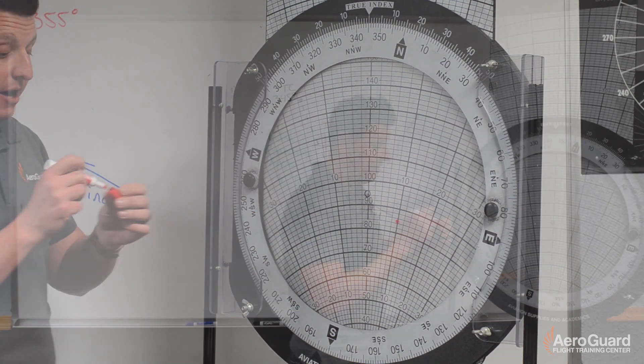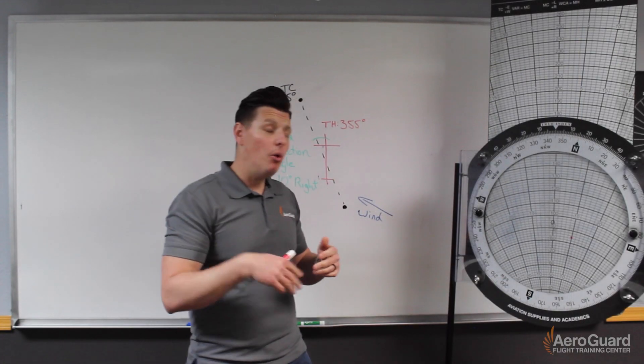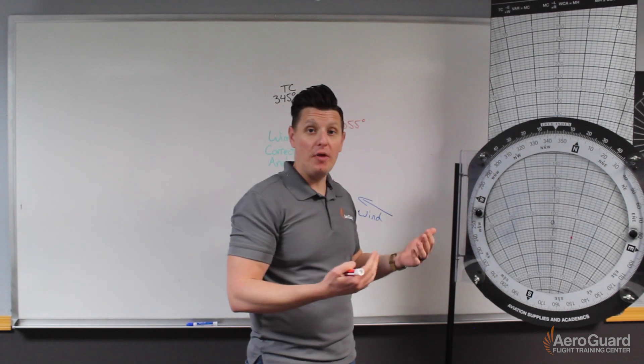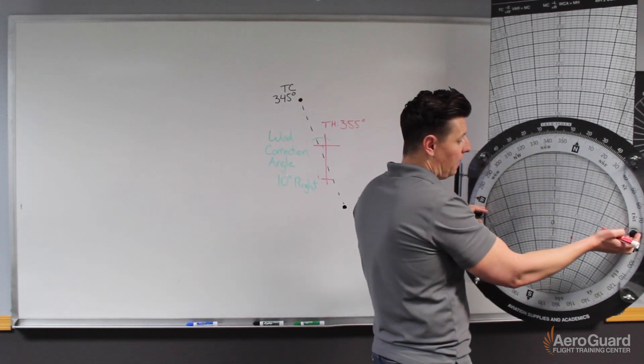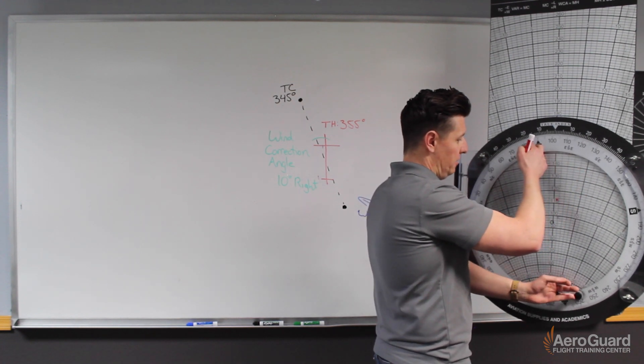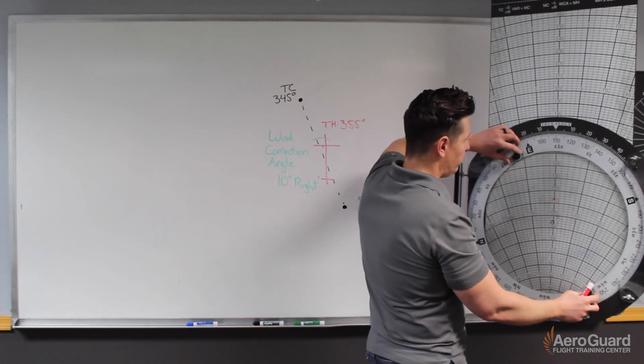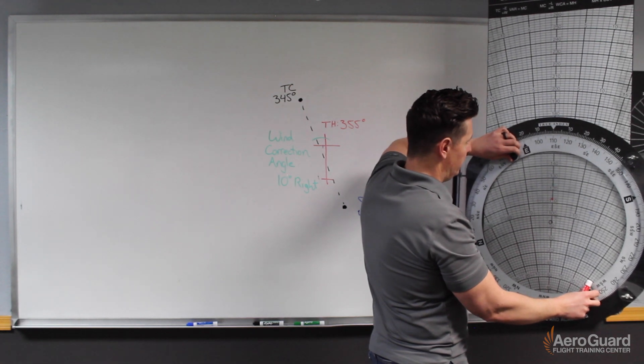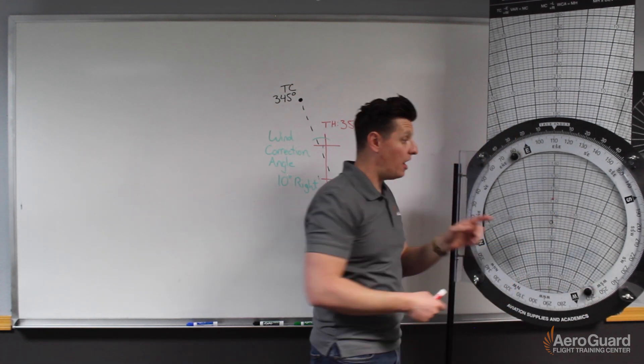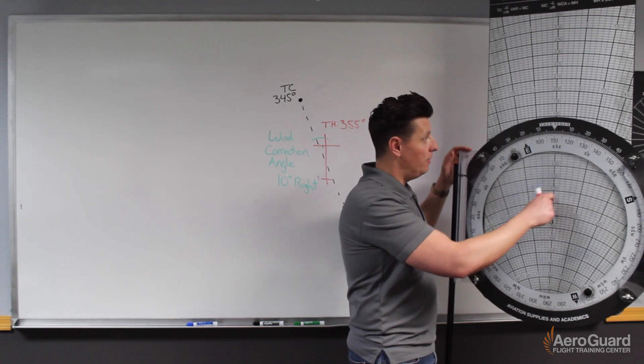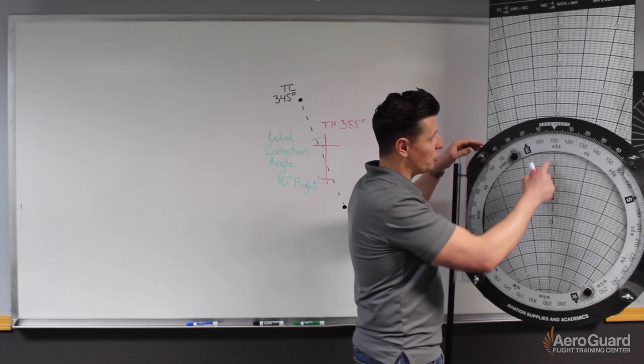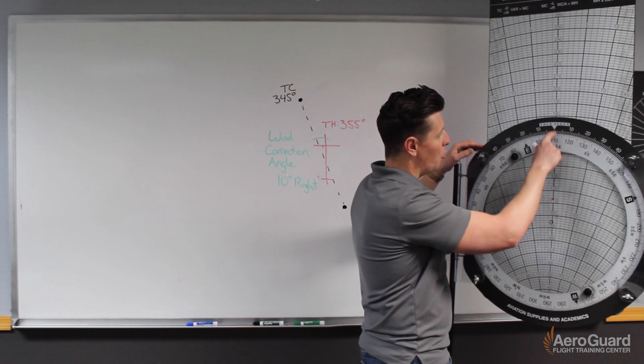So now what we can do is determine what the direction and speed of the wind would be. In this case, I will simply rotate the E6B until the wind dot is straight up. We notice now that this wind dot is straight up in our wind direction.